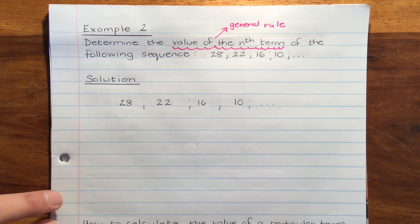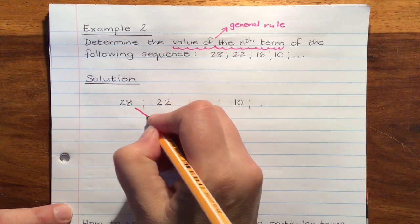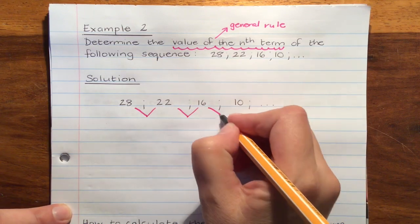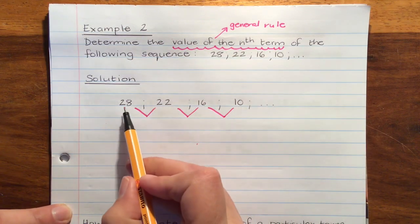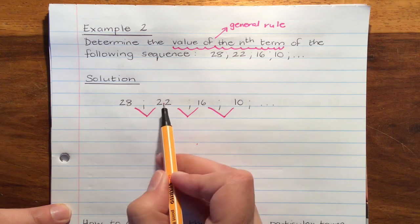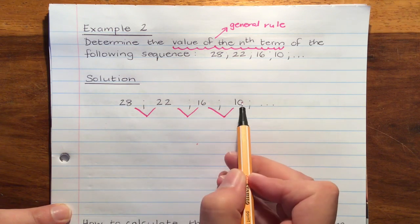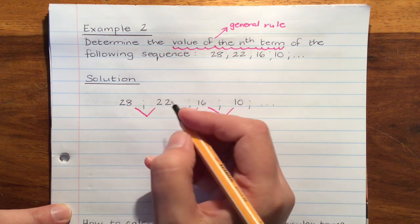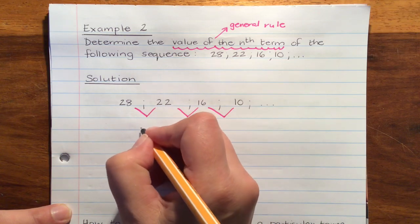Let's first find our common difference. This time we have a sequence which is decreasing. 28 minus 22, 16, 10. So our difference is not actually 6, it's negative 6.